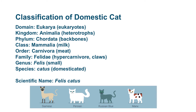To help you understand how this works, we're going to go through the classification of the domestic cat, because this is something that most people are at least familiar with. Cats are in the domain Eukarya because they're eukaryotes. They're in the animal kingdom — they're heterotrophic. They're in the phylum Chordata because they have backbones. They're in the class Mammalia because they have milk and hair. They're in the order Carnivora because they are meat eating. They're in the family Felidae because most of them have retractable claws. All cats are hypercarnivores, meaning that they have to eat animal flesh to survive.